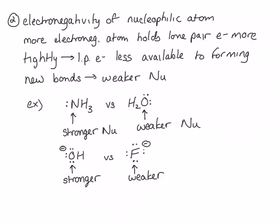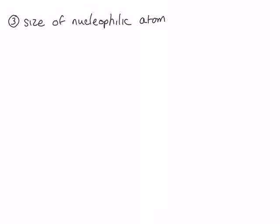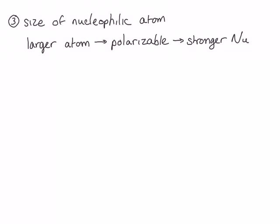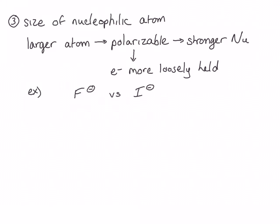Another thing that affects nucleophilicity is the size of the nucleophilic atom. A larger atom is more polarizable, meaning its electrons can move around more, which makes it more nucleophilic. Polarizable means that the electrons are held more loosely, so they are more easily able to move towards a positive charge and act as a nucleophile. For example, comparing fluoride ion versus iodide ion, iodide is larger than fluoride, and is therefore more polarizable, and therefore a better nucleophile.